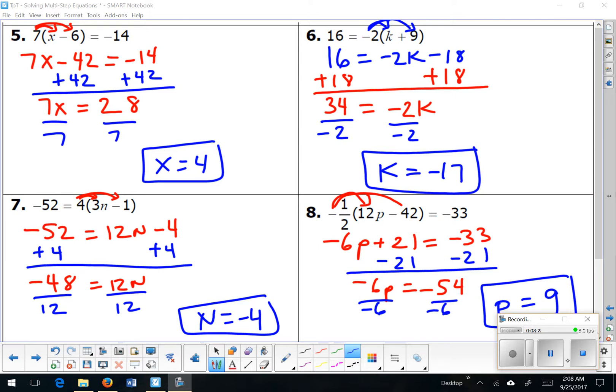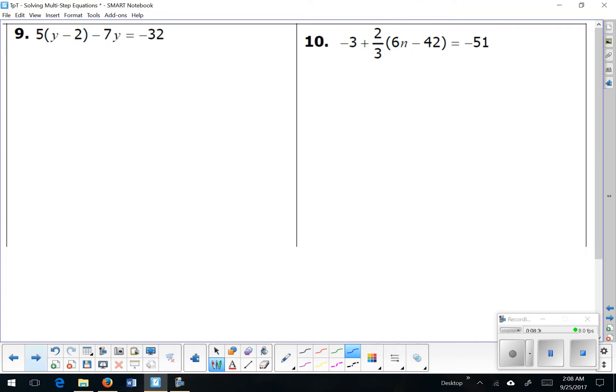Let's take a look at the back side of this worksheet. The back side of this worksheet contains all four steps that we talked about at the beginning: distributing, combining, using our additive inverse and multiplicative inverses, and finding our final solution. So I'm going to do 9 and 10, and then you're going to try 11 through 16 on your own.